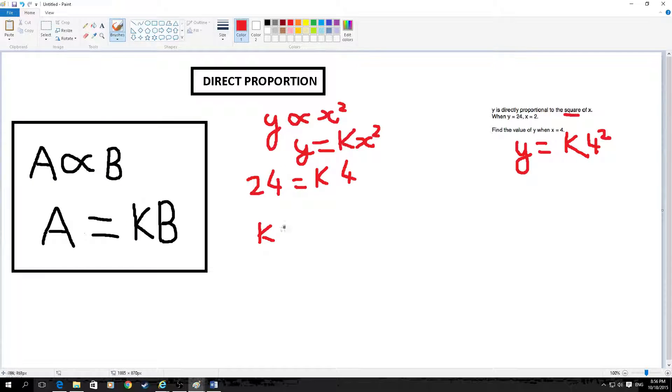So then k equals 6. Because you take the 4 over here. Because these are times, it becomes divide. So you divide 24 by 4, which is 6.